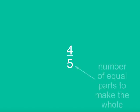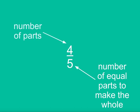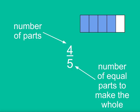Both the numerator and the denominator are important to understand the value of the fraction. The denominator shows the number of equal parts to make the whole — in this fraction, it is five equal parts, or fifths. The numerator shows the number of parts, so shows the value of the fraction — in this fraction, it is four fifths. Being able to imagine the fraction bar will help you to understand the value of the fraction.